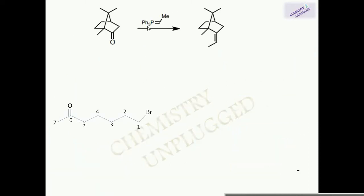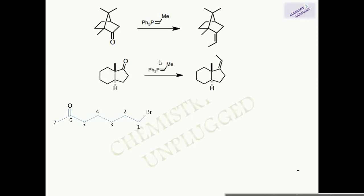Let's take another example: we have a simple phosphorane Ph₃P=CHCH₃. Because this phosphorane is simple (unstabilized), the product is mainly Z-selective — both groups are on the same side of the double bond. In the next example, we again have the same phosphorane, so we again get the Z-selective alkene as the major product.